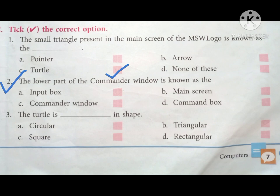Number three: The turtle is dash in shape. A. Circular, B. Triangular, C. Square, and D. Rectangular. It is very easy. We know that the turtle is triangular in shape.